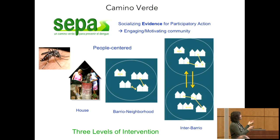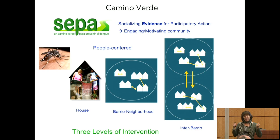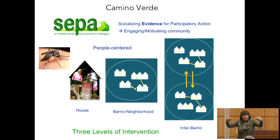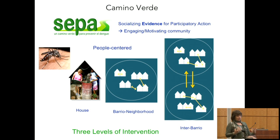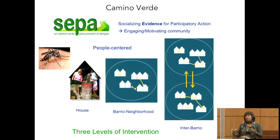We worked with a nonprofit called CIET, which had developed an epidemiological framework used in 50 countries over 30 years to bring community data into policy. We added a layer called 'socializing evidence for participatory action' applied to the dengue problem. The best way to engage and motivate a community is with their own evidence — when communities find larvae in their own water and figure out their own solutions, that's when it really works.